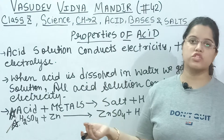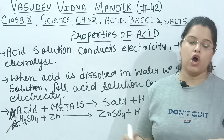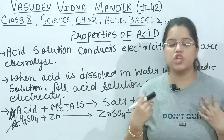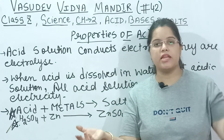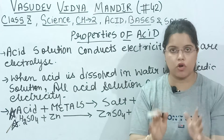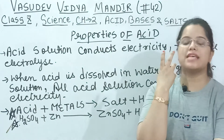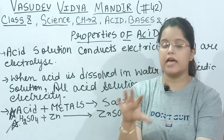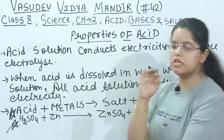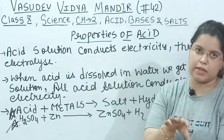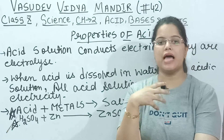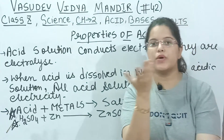Whether we dissolve acid in water or add HCl (hydrochloric acid), if we pass electricity through that solution, the electricity will flow through it. So an acid solution is a conductor of electricity. The next very important point is: what will happen if any acid reacts with metal?